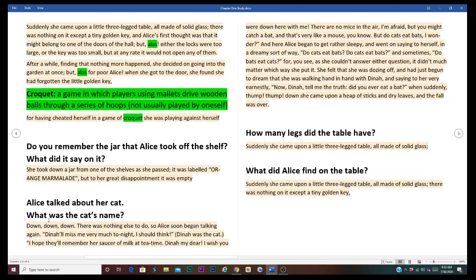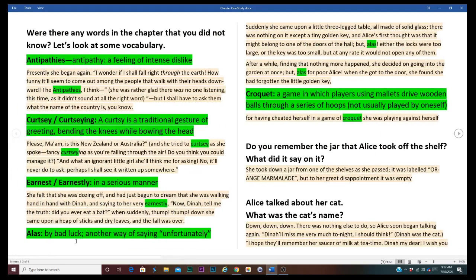Then we have alas. It's by bad luck. It's another way of saying unfortunately. Suddenly she came upon a little three-legged table, all made of solid glass. There was nothing on it except a tiny golden key and Alice's first thought was that it might belong to one of the doors of the hall. But alas, either the locks were too large or the key was too small. So just think of, unfortunately the locks were too large, the key was too small. It just didn't work.